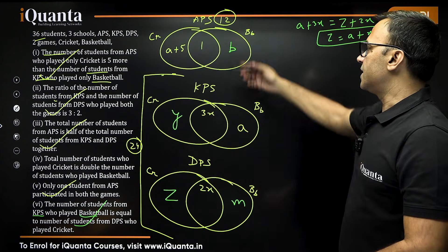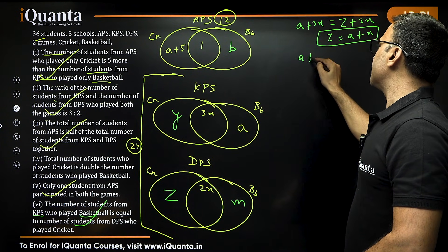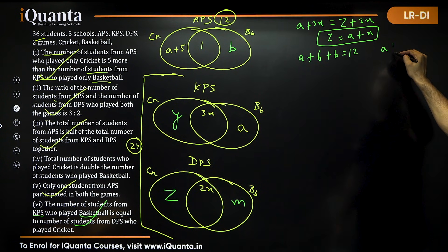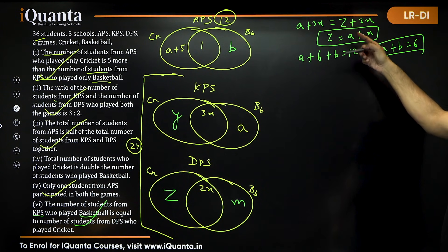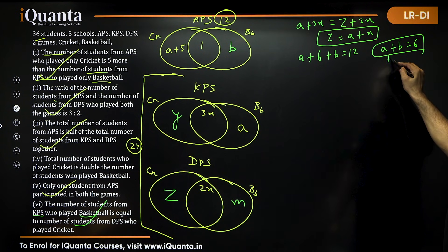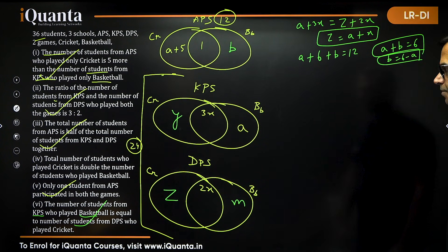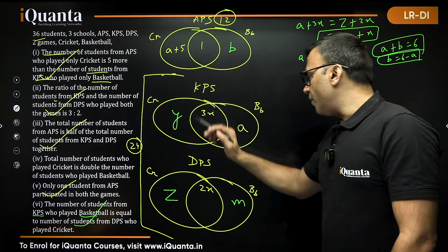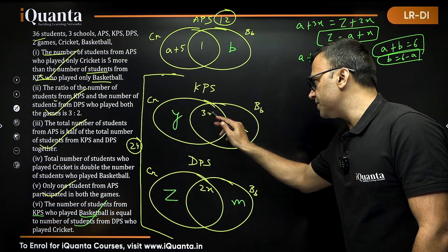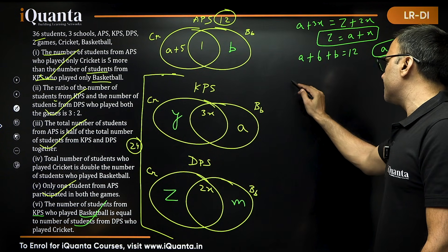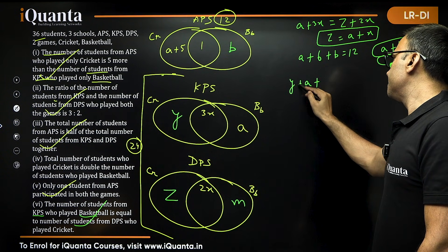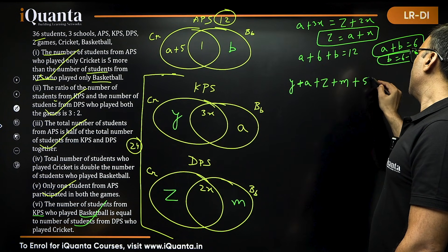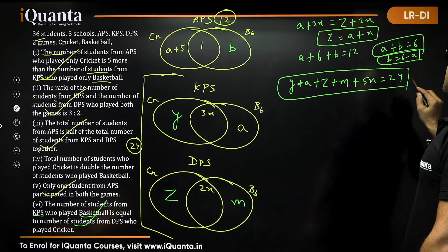The total of APS is 12. So (A plus 5) plus 1 plus B equals 12, giving us A plus B equals 6, or B equals 6 minus A. Now using the total of KPS and DPS together which is 24: Y plus 3x plus A plus Z plus 2x plus M equals 24, which simplifies to Y plus A plus Z plus M plus 5x equals 24.